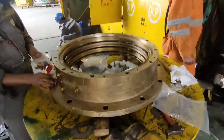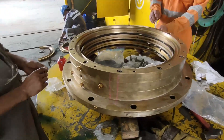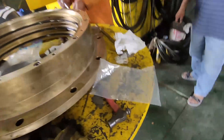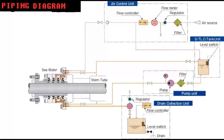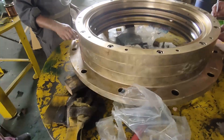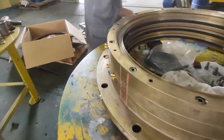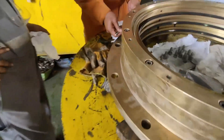Oil lubricated stern tubes require two types of seals: water seals and oil seals. The diagram shows the flow of oil and air on the stern tube system. Modern stern tube seals are highly engineered units designed and manufactured to withstand a rigorous working environment for long periods of time.